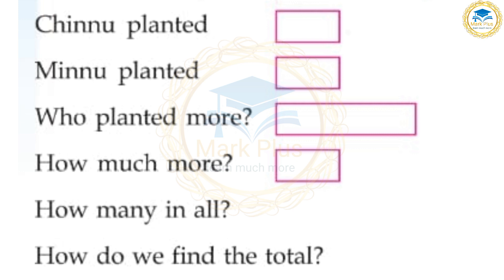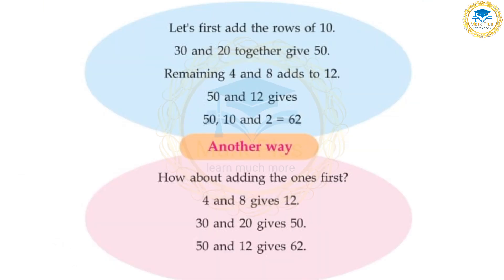How many in all? How do we find the total? Let's first add the rows of 10. 30 and 20 together give 50. Remaining 4 and 8 adds to 12. 50 and 12 gives 62. Another way — adding the 1's first: 4 and 8 gives 12, then 30 and 20 gives 50, so 50 plus 12 is 62.